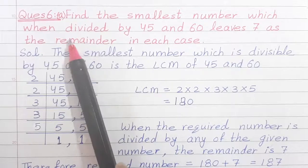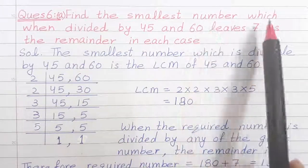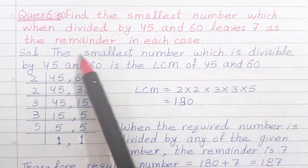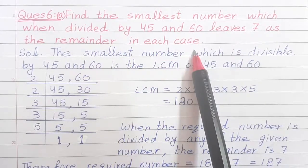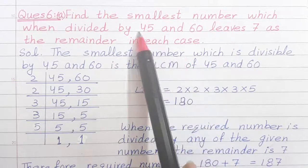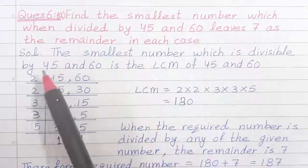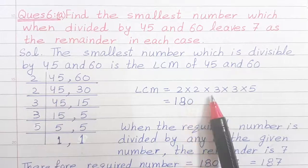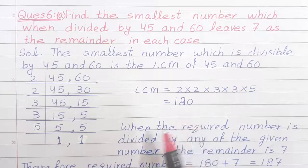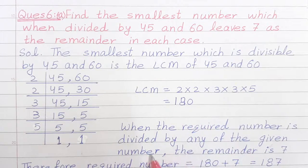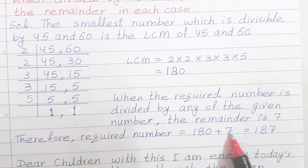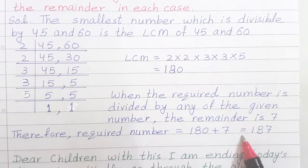Now, see question number 6A part. Find the smallest number which when divided by 45 and 60 leaves 7 as the remainder in each case. Now students, what we have to do here is, let us find the LCM of 45 and 60 by any method. After calculating the LCM which is coming out to be 180, the required number is divided by any of the given number and the remainder is 7. So, therefore, LCM plus 7, that is 187 is the required number.